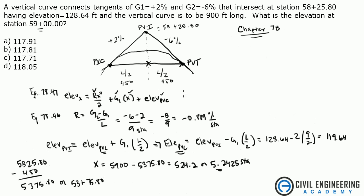So now we know X. All we need to do now is plug in everything that we got. We know R is -0.889 divided by 2, times 5.2425 squared, plus G1 (G1 is 2, and you leave that as a percentage - same thing we did with R, G1, G2, we left those as percentages, so we're working with percentages and stations) times 5.2425 plus the elevation at PVC, which we solved for, PVC is 119.64. What does that give me? Plug all that in, gives me an answer of 117.91, which is our answer.